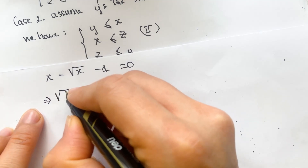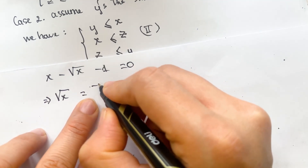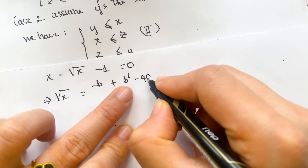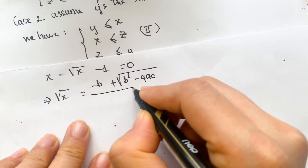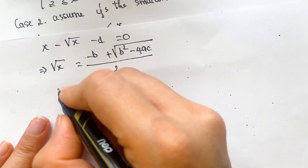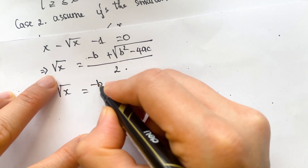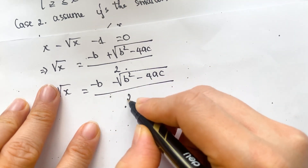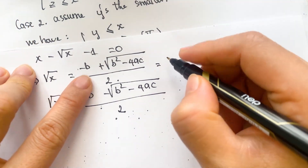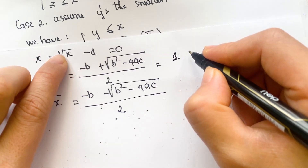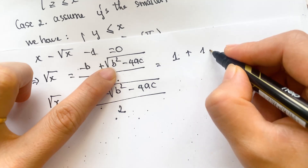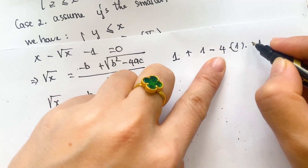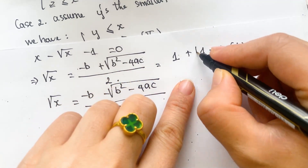We have the value of square root of x using the quadratic formula. Square root of x equals minus b plus square root of b squared minus 4ac, over 2. And the second case: square root of x equals minus b minus square root of b squared minus 4ac, over 2. Here minus b gives 1, and b squared minus 4ac gives 1 plus 4 times 1 times negative one, so the discriminant is 1 plus 4 equals 5.